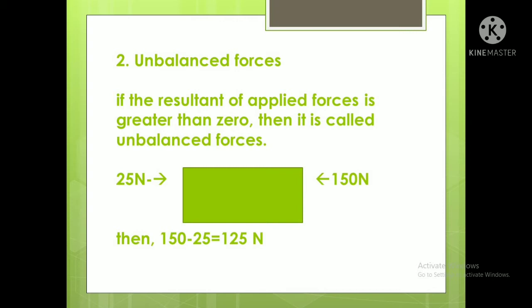Unbalanced force is when the resultant of applied forces is greater than zero. For example, your friend applies 25 Newton, but that day you had a heavy breakfast and had more energy, so you applied your full force of 150 Newton. Then automatically your friend has to go back to the left-hand side. The resultant force will be 150 minus 25, which gives 125 Newton. This is the resultant force, and it is known as unbalanced force because both forces are not the same.